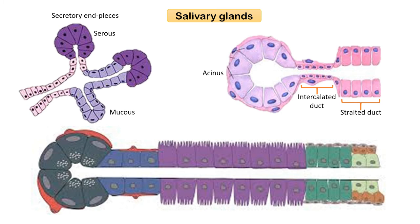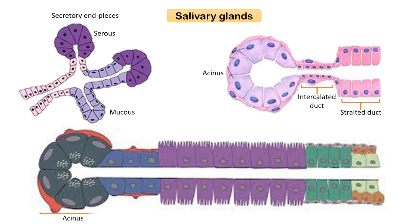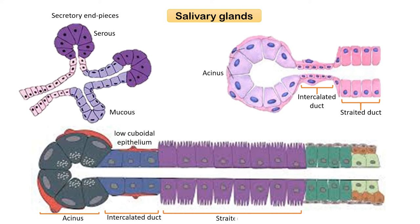The intercalated ducts are the first or most distal element of the intralobular duct system, lined by a low cuboidal epithelium, and drain the secretory end pieces (acini). The striated ducts, also known as secretory salivary ducts, are the most specialized of the salivary ducts. They carry out most of the ionic transport functions along the route of saliva from the acinar lumen to the oral cavity, and are lined by tall columnar epithelial cells with distinctly eosinophilic cytoplasm and spherical centrally or eccentrically placed nuclei.